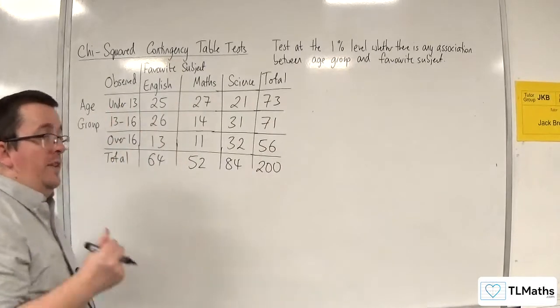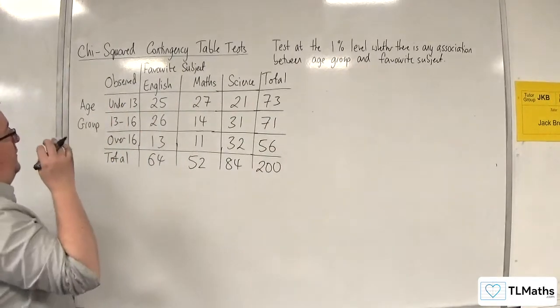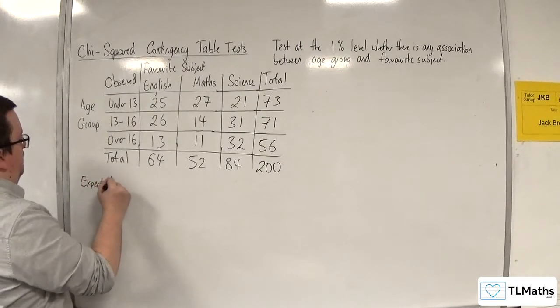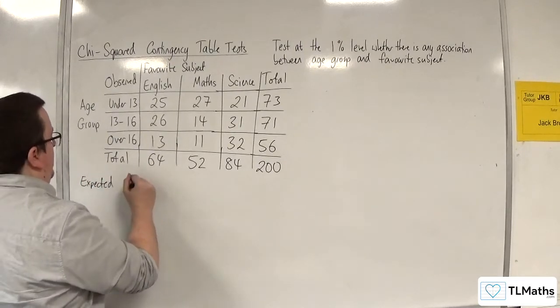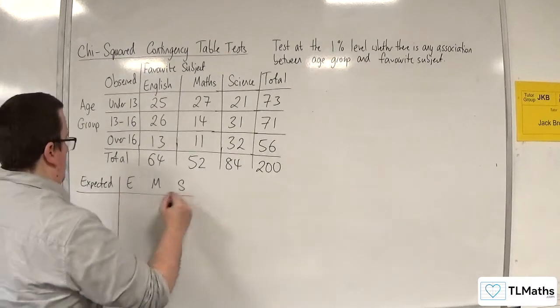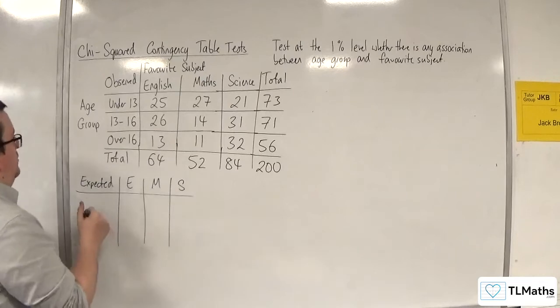Okay, so the next thing that we do, we need an expected frequency table. So we can have expected and we can have English, Maths, Science.